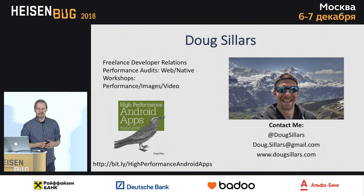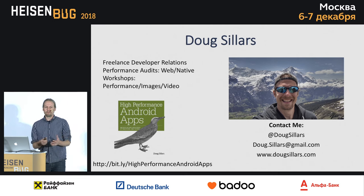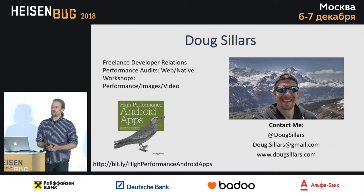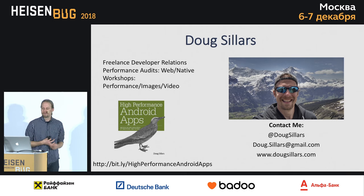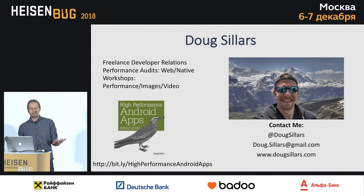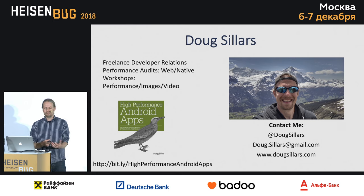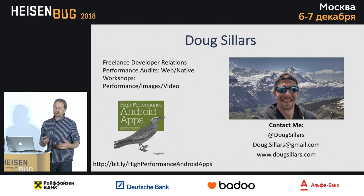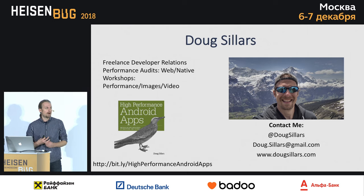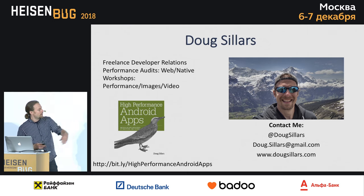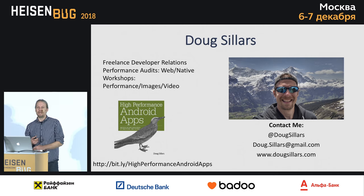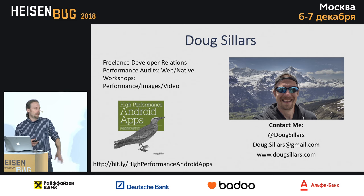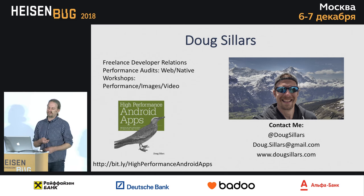A little bit about me before I get started. I do freelance developer relations. I'm originally from the United States, so I'll be speaking in English today. I've been traveling with my family around Europe for the last two years, and we're living in Scotland right now. I do performance audits — I help companies test their websites and native apps to see if they can be sped up. I run workshops on performance, how to optimize images, how to optimize video. I wrote a book on how to identify issues in Android apps, and that's the link to the PDF — you can download it. I'll post the slides up later so you can get those URLs as well.